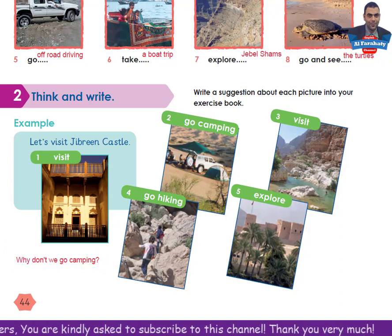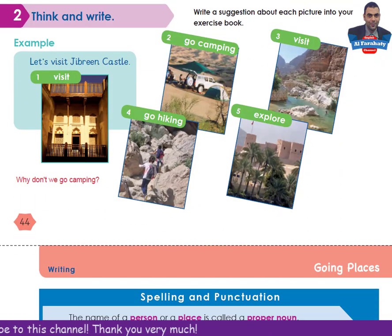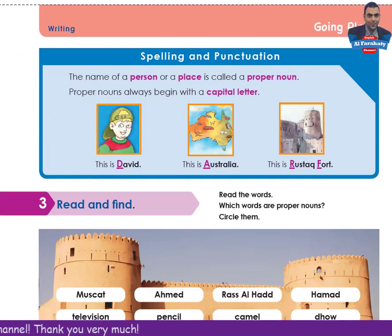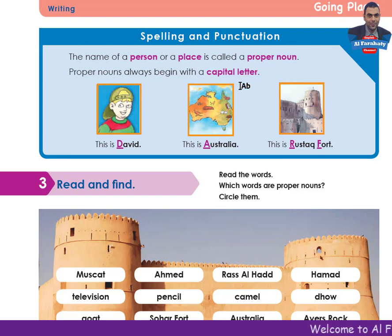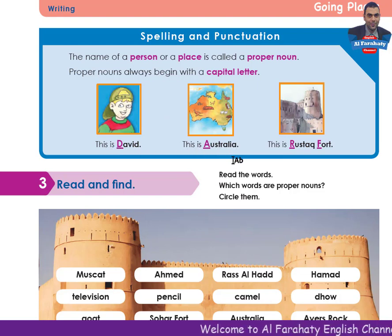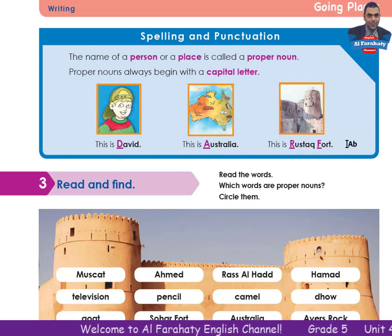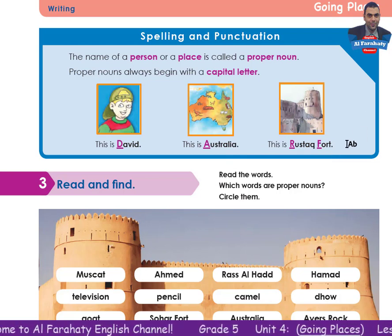Try to write the other suggestions. Let's go to page 45, Writing — Spelling and Punctuation. The name of a person or a place is called a proper noun. We have studied that before. Proper nouns always begin with a capital letter. For example: David, Australia, Rostaq Fort. You have to know that a proper noun in English begins with a capital letter.